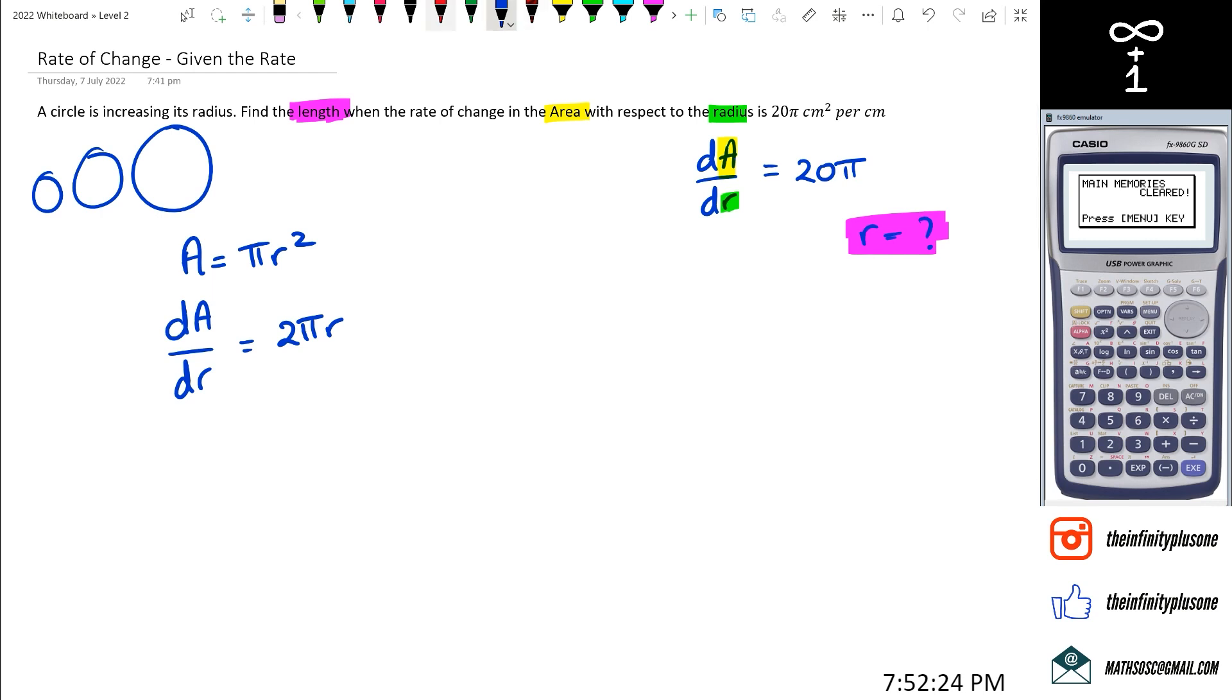what we're going to be doing is we're going to substitute dA dr equals 20 pi and figure out what r is. So dA dr is equal to 20 pi. So we're going to put down 20 pi is equal to 2 pi r. And you can see things are slowly starting to make sense here.